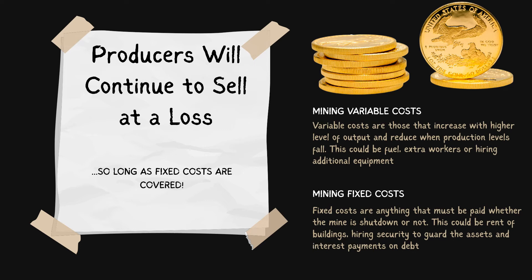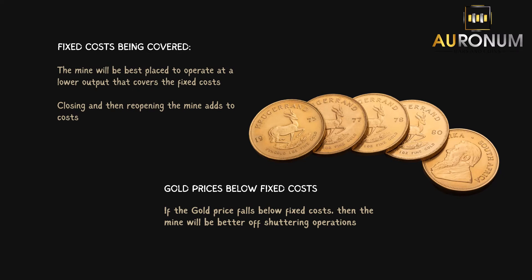This is the key to understanding the shutdown rule, because sometimes it's better to operate at a lower level that covers your fixed costs rather than shutting down the mine and burning through cash because you still have those fixed cost liabilities. So what the shutdown rule predicts is that as long as the revenue coming in from extracting and selling gold covers the company's fixed costs, they will be better off producing at a lower level.